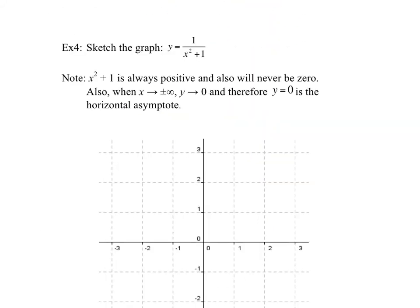Example 4: sketch the graph of 1 over x squared plus 1. Note that x squared plus 1 is always positive, so it will never equal 0. So there is no vertical asymptote, because the denominator will never be 0. If you set the denominator to 0 and bring the 1 over, you get x squared equals negative 1, which is impossible because x squared is always positive. And when x becomes very large, you get 1 over infinity, which approaches 0 — so y equals 0 is the horizontal asymptote. There is a horizontal asymptote but no vertical asymptote.